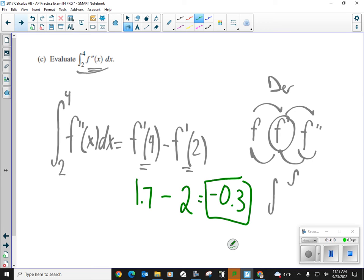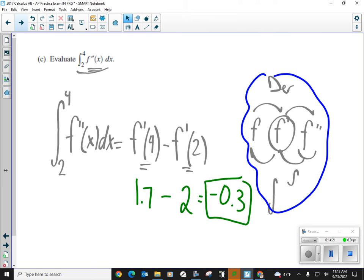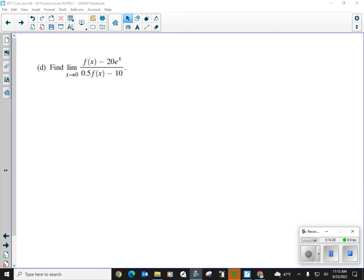1.7 minus 2, which will give us negative 0.3. There you go. Man, these ones without a calculator, I mean, that was really easy. So it tests you on your knowledge of this, okay? Going back and forth and your familiarity with integrals.